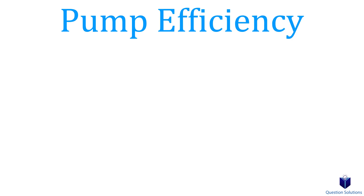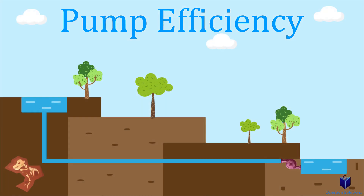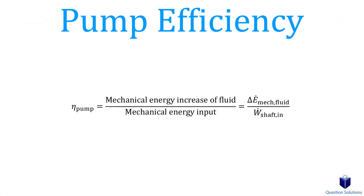Next, let's look at pump efficiency. Say we wanted to move water from one location to another using a pump, which works by supplying mechanical energy to the fluid. Pumps can increase the pressure, velocity, or elevation of a fluid. To find pump efficiency, we divide the mechanical energy increase of the fluid by the mechanical energy input — specifically, the rate of increase in mechanical energy of the fluid.